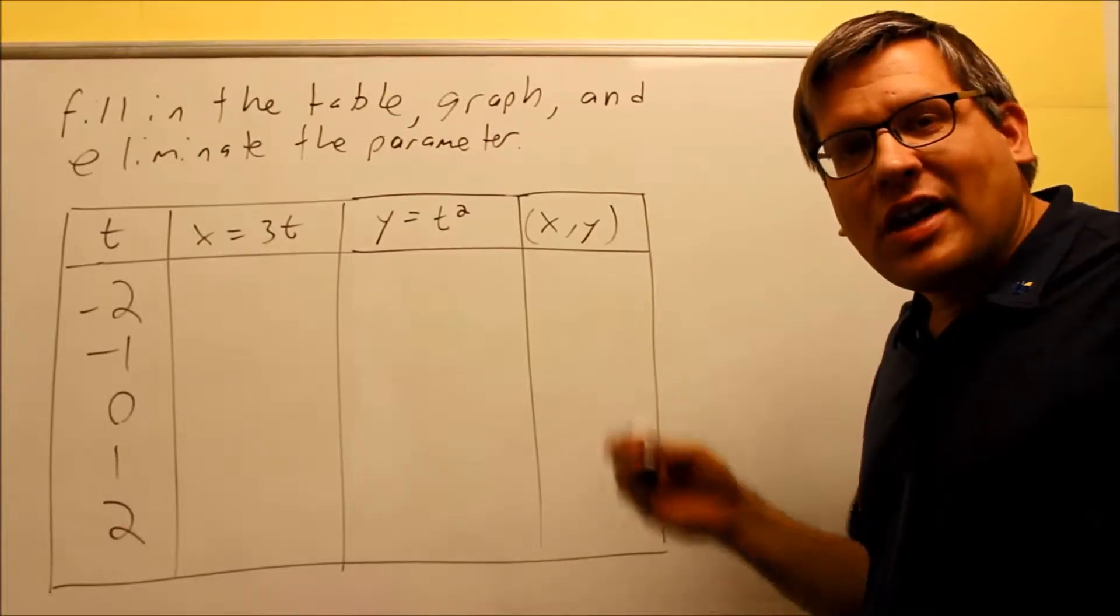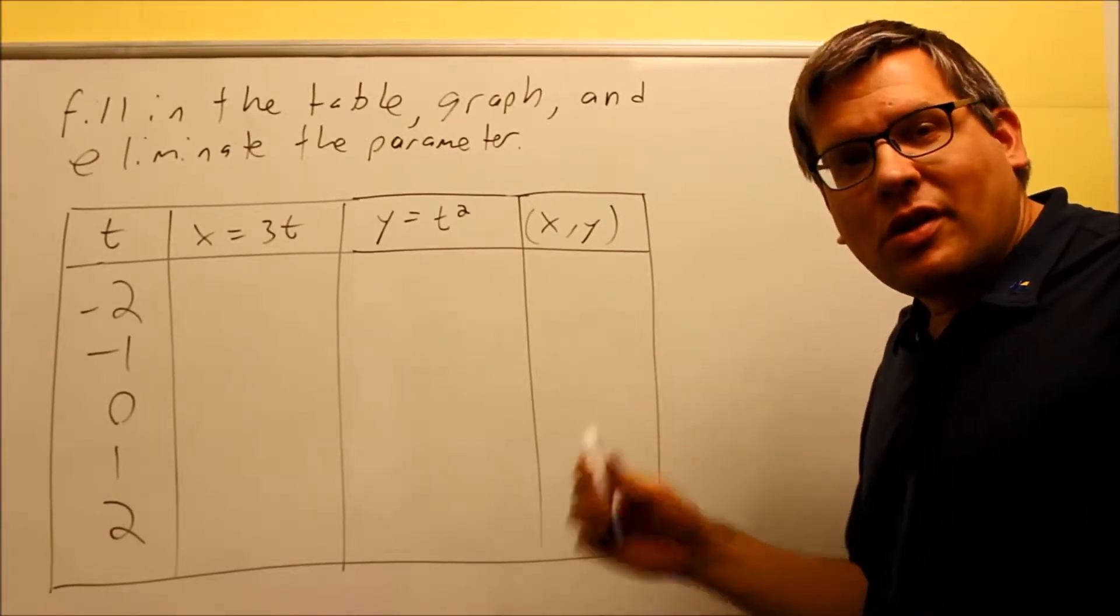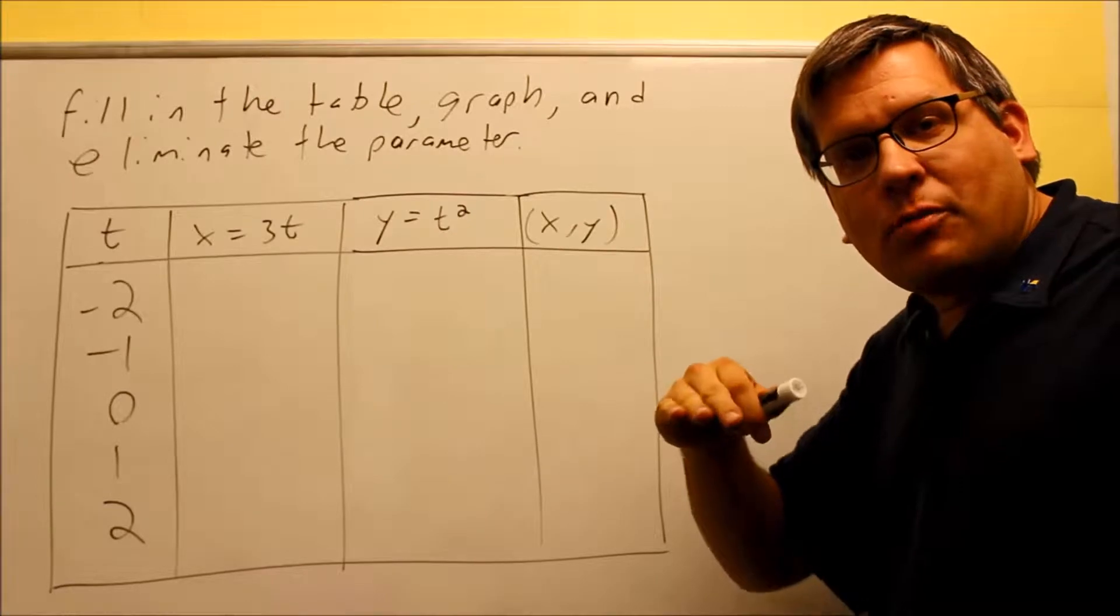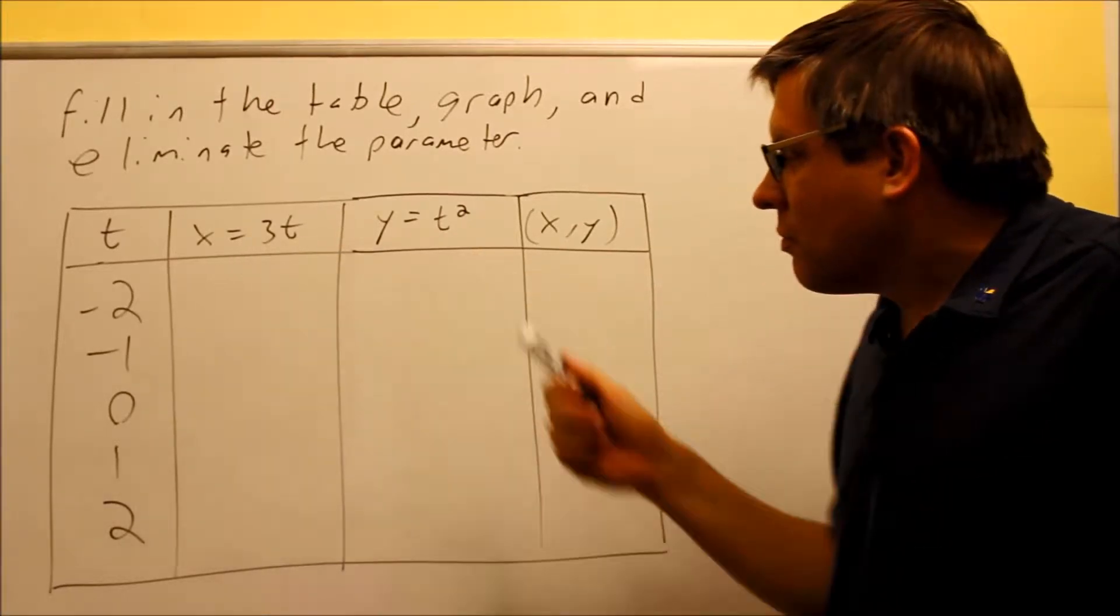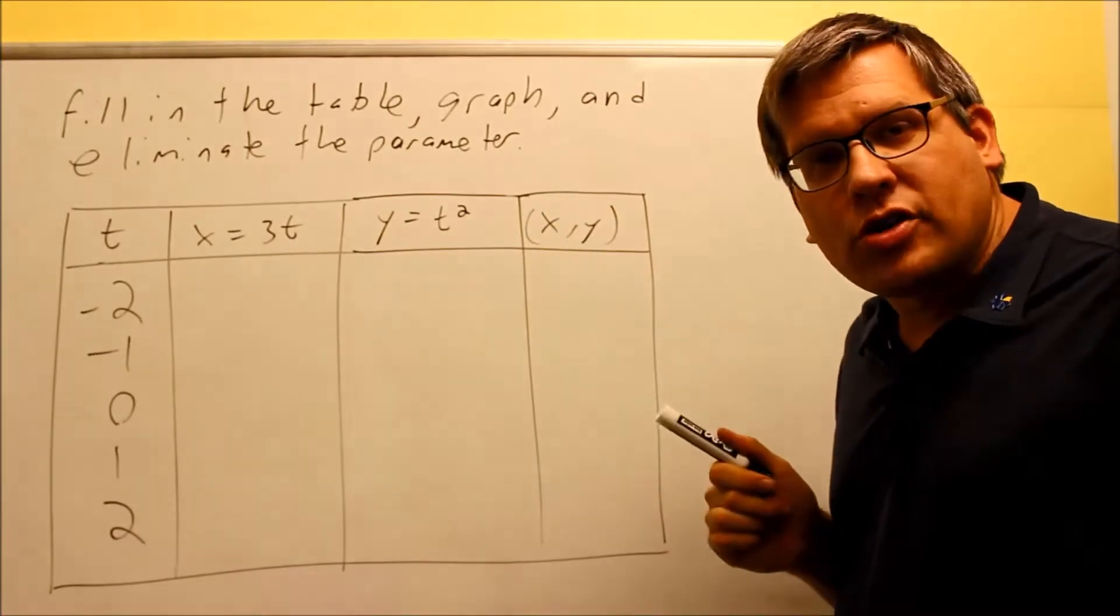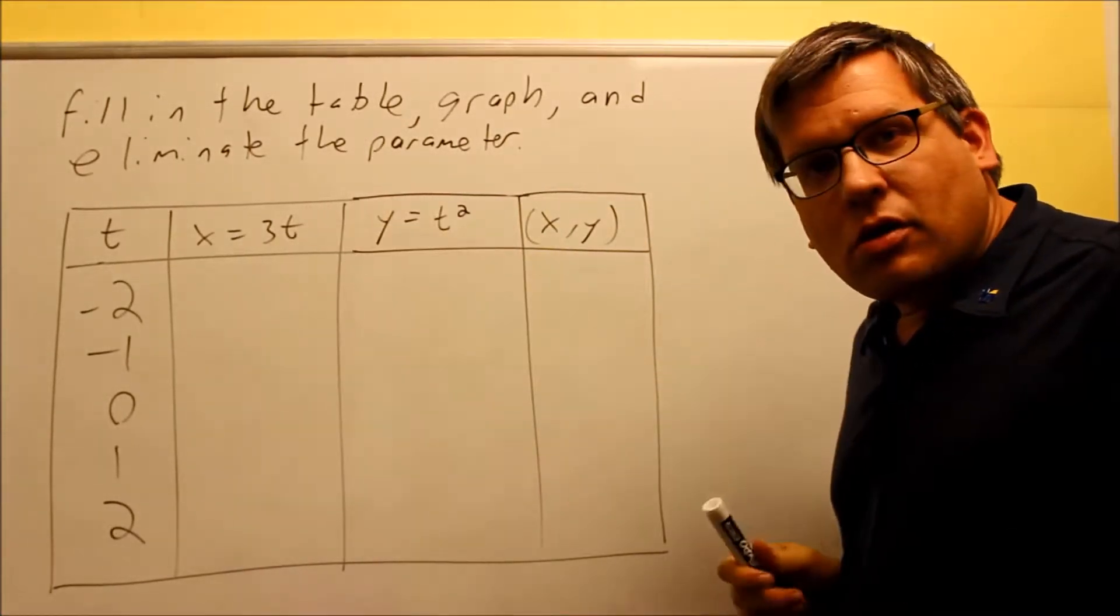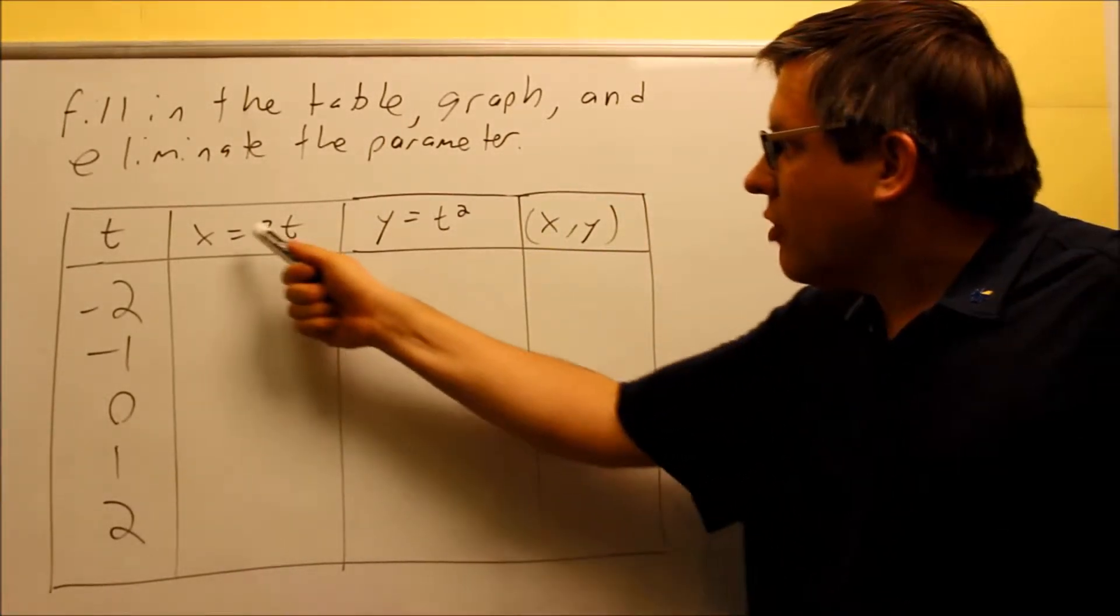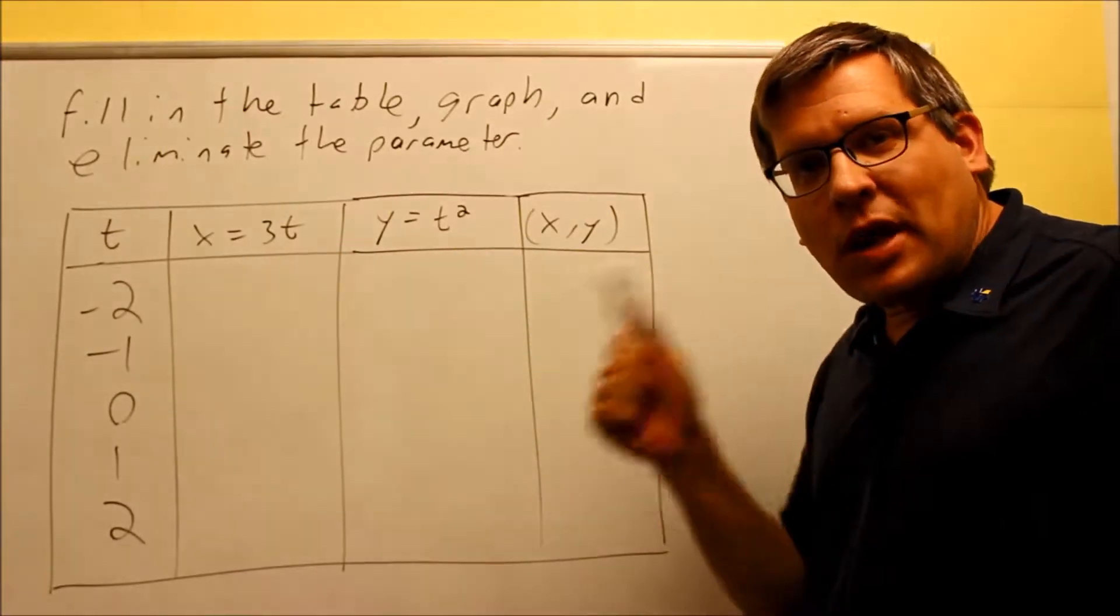So basically, every time you have a certain time, each time that moves up, you actually get a different position. So this would be considered a set of parametric equations. The parameter, that's t. So basically, you have an x and a y that's based on a time.